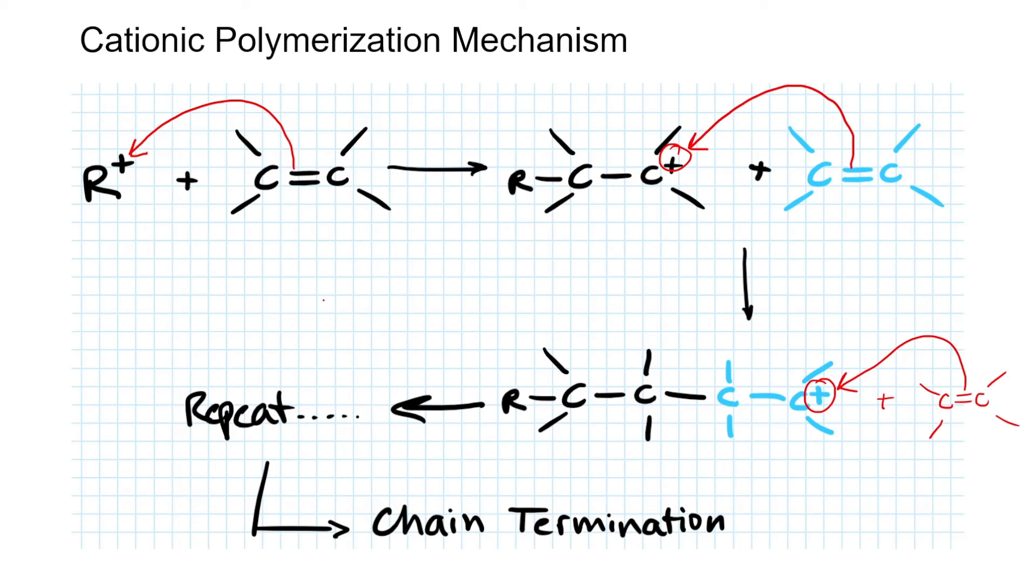Again, that's cationic polymerization in a nutshell. Very simple, very straightforward, not difficult. And again, all polymerization reactions can be broken down into initiation, propagation, and chain termination.